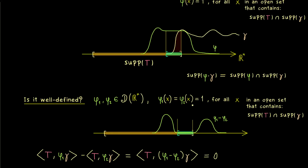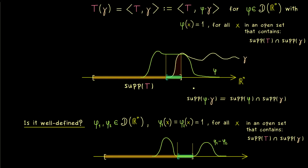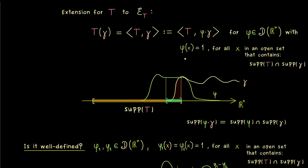Therefore, the actual definition should read that phi is equal to 1 for all x in an open set that contains the intersection. This now guarantees that nothing strange can happen on the boundary of the supports as well. With that we have our nice definition for the extension of T.